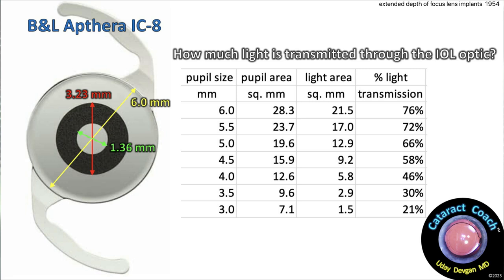At a very large 6mm pupil, patients get light from around the donut plus through the center, so the total light allowed into the eye is about 76% — about 24% is blocked. You really don't notice that much. But at a 4mm pupil, you've lost more than half the light. And at a 3mm pupil, you only get 21% of the light. A monofocal lens with a simple optic and a 3mm pupil lets in 100% of the light, but the Apthera lens with that tiny 1.36mm aperture in the same eye with a 3mm pupil will let in only 21%.